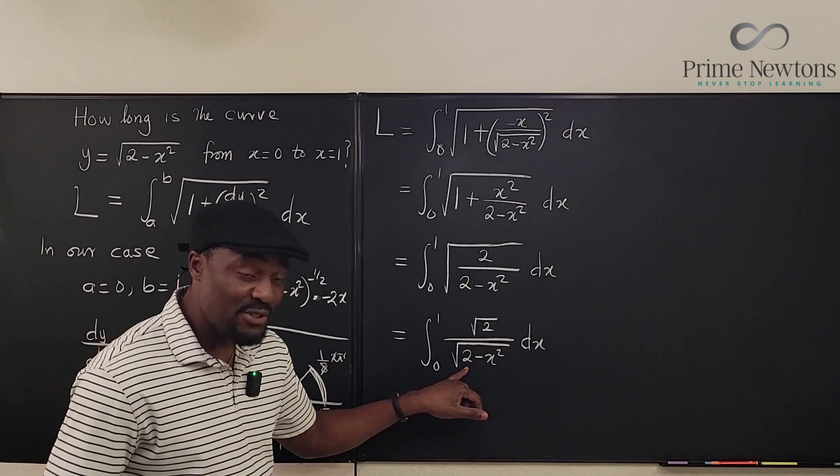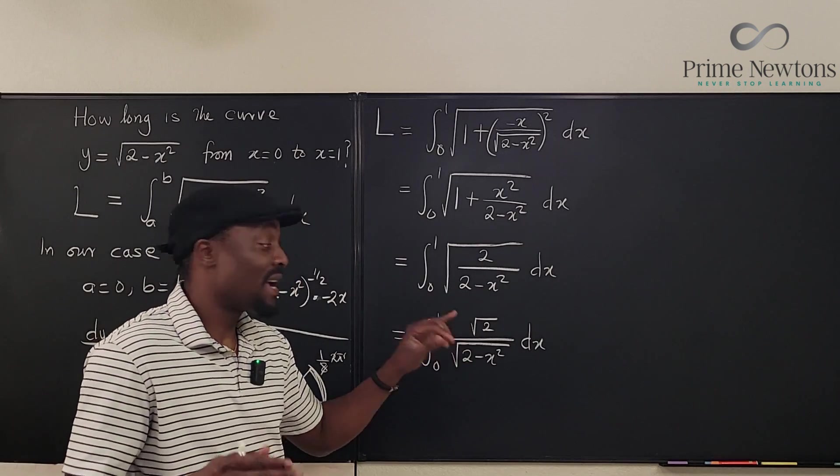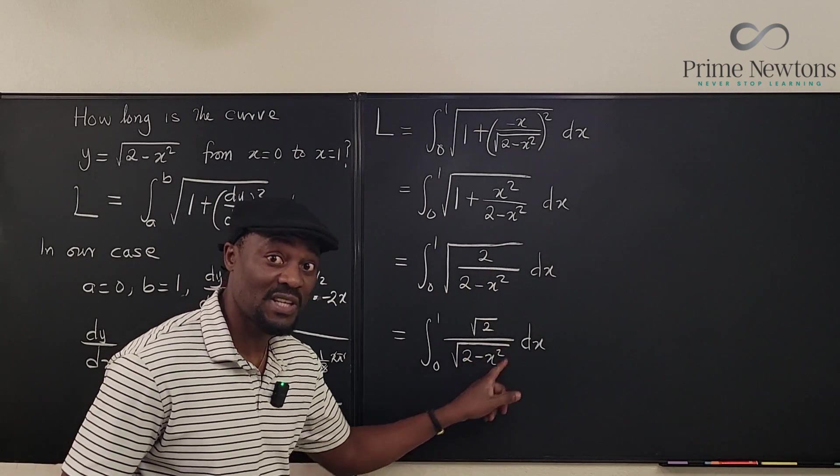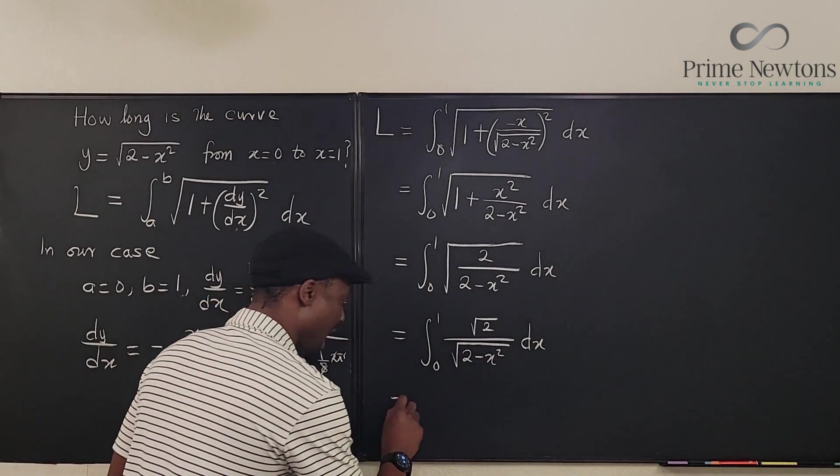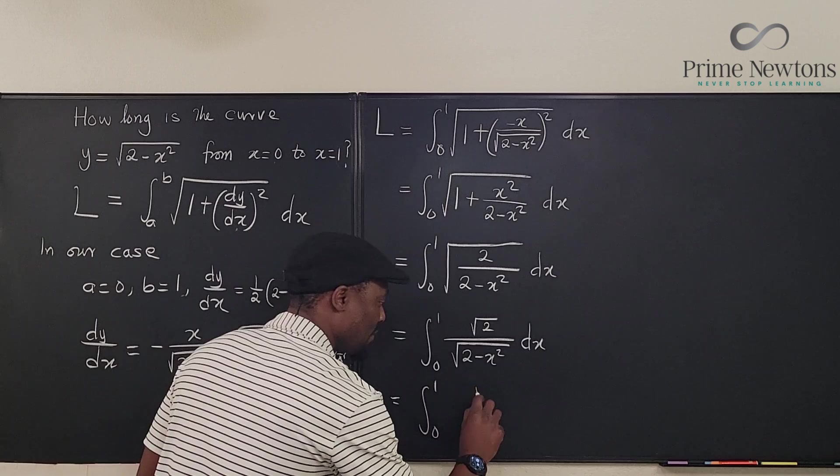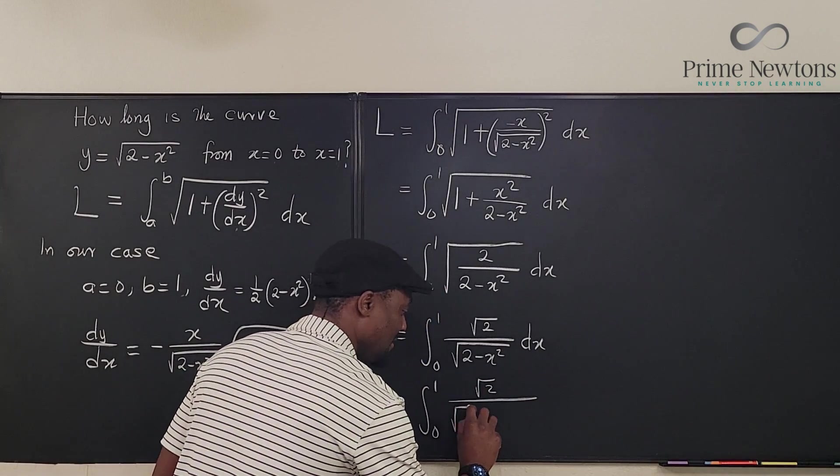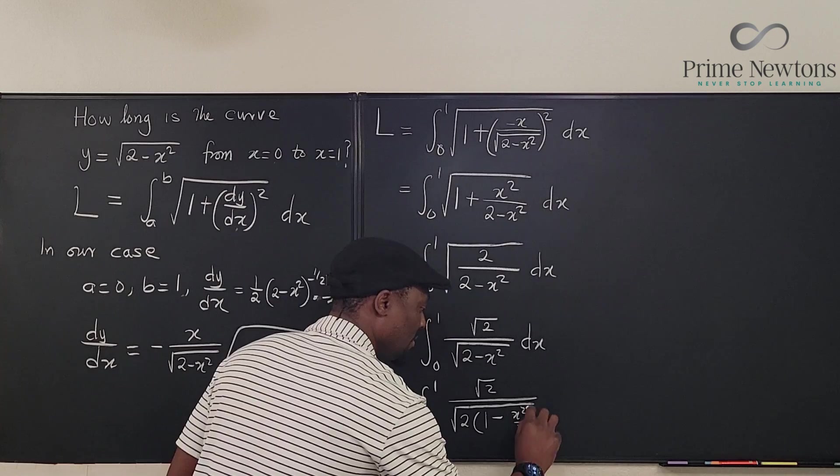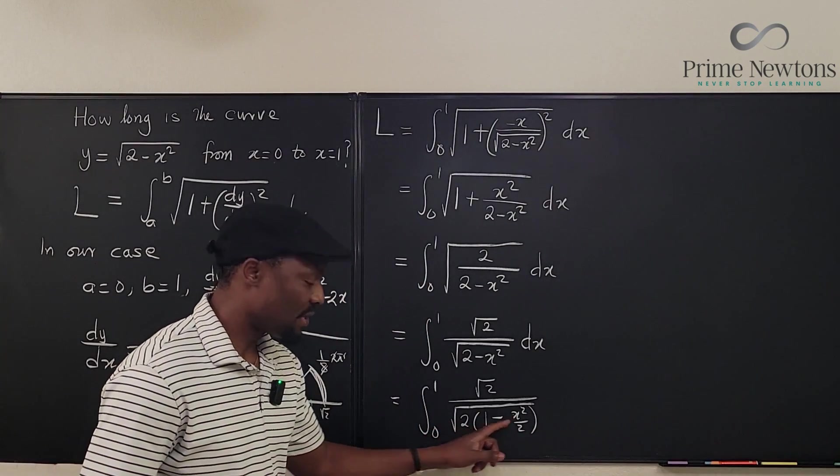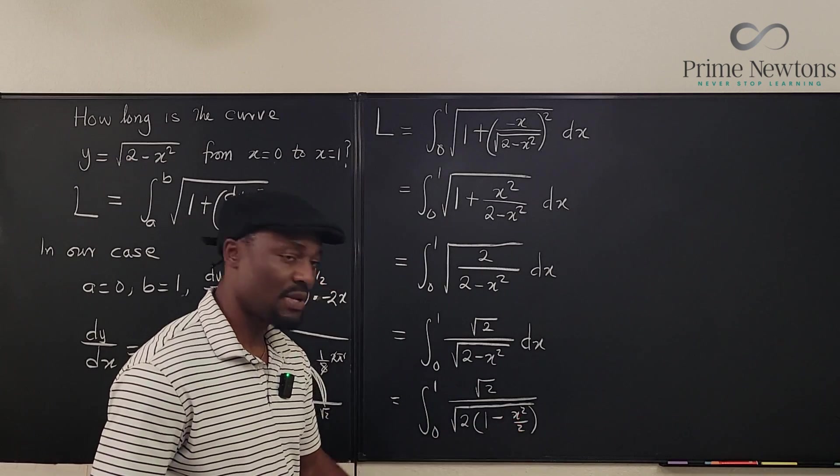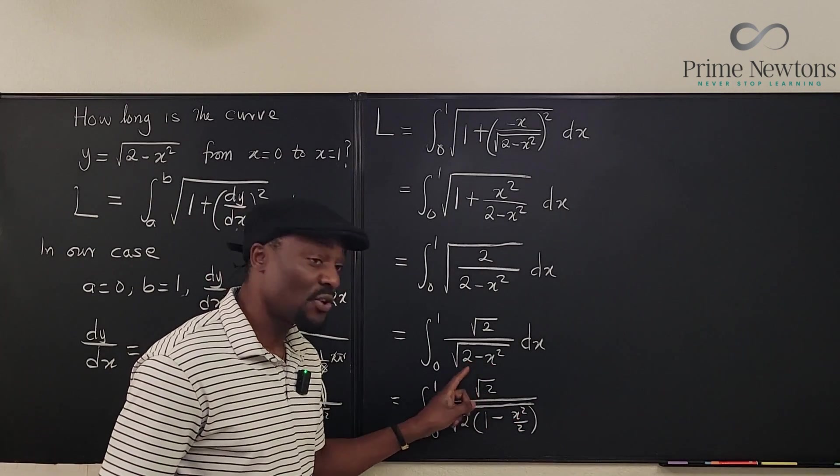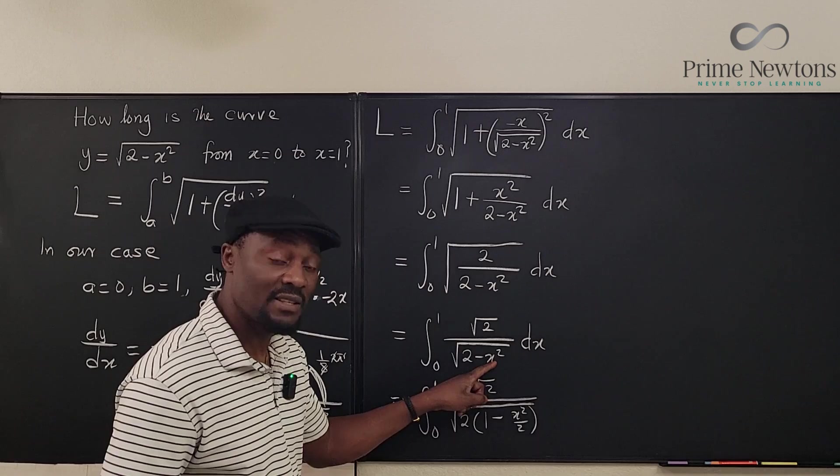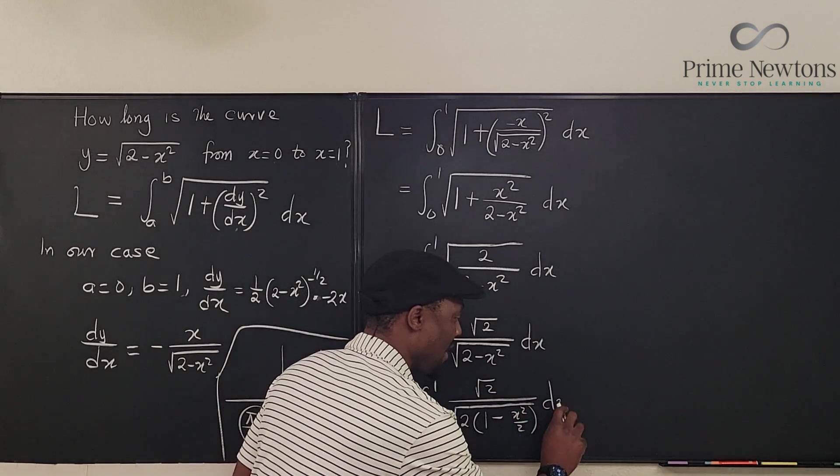So I need to make this guy 1 so that I can apply my easy substitution. I want to do 1 minus sine squared theta because I'm going to replace whatever is here with sine theta. So that I'm going to rewrite this as the integral from 0 to 1 of the square root of 2 divided by, I'm going to write this as 2 into 1 minus x²/2. You see, if I redistribute this 2, it's going to change this back to 2 and it's going to cancel this so it becomes this. So that's what you call factoring. Factoring means you're dividing each of the terms by what you're taking out. So I took out 2. It means I've divided this by 2. I got 1. I've divided this by 2. I've gotten x²/2.